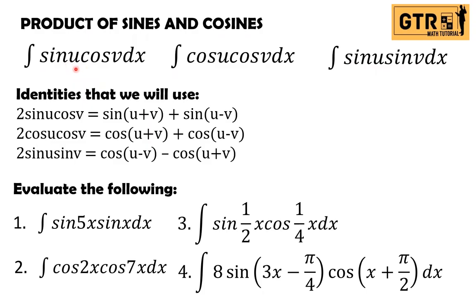So if we have different angles — u and v — we can use these three identities. We have: 2 sin(u)cos(v) = sin(u+v) + sin(u−v); 2 cos(u)cos(v) = cos(u+v) + cos(u−v); and 2 sin(u)sin(v) = cos(u−v) − cos(u+v). If the given is only sin(u)cos(v), we can multiply both sides of the equation by one half.